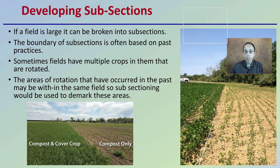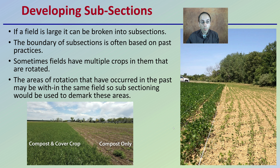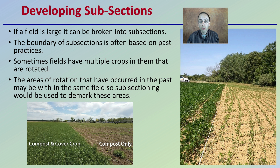How do we develop these subsections? If the field is large, it can be broken into subsections. The boundary of subsections is often based on past practices. For example, as we see here, compost and a cover crop versus compost only — even though this might be the same field, it would be good to soil sample these separately. Some fields also have multiple crops on them that are rotated, so that can also be utilized to define different subsections. Areas of rotation that have occurred in the past may be within the same field, so subsectioning would be used to demark these areas, giving growers a little more information.